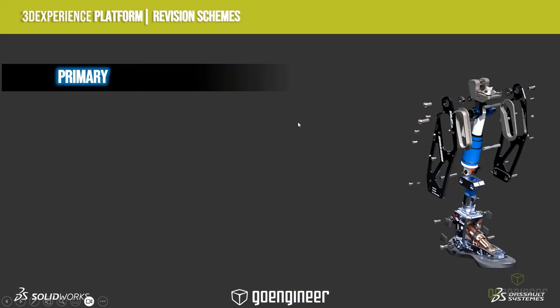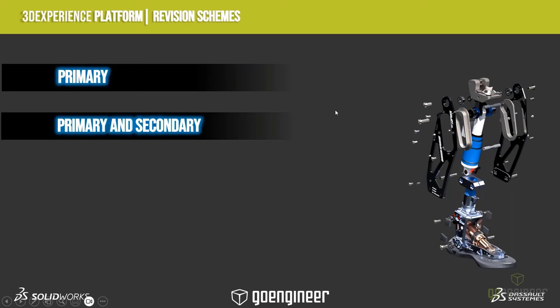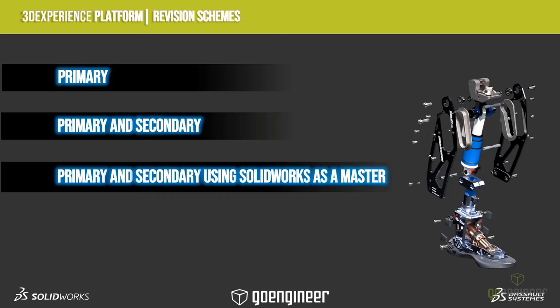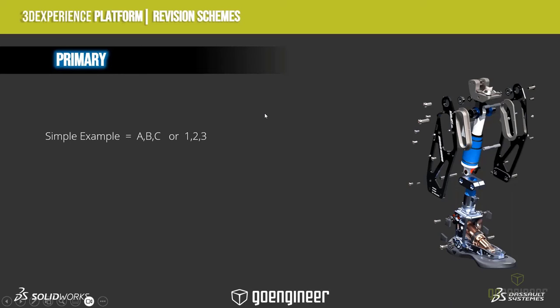The focus today is really to start off with revision schemes. What does the platform have to offer? We've kept it pretty simple. We have a primary revision scheme and a primary-and-secondary revision scheme — these are the two main revisioning schemes the platform has as of today. Both come with out-of-the-box settings. There is a third called primary and secondary using SOLIDWORKS as a master, which is a special case I'm not going to cover in this webinar. Our focus for today is going to be again on primary.